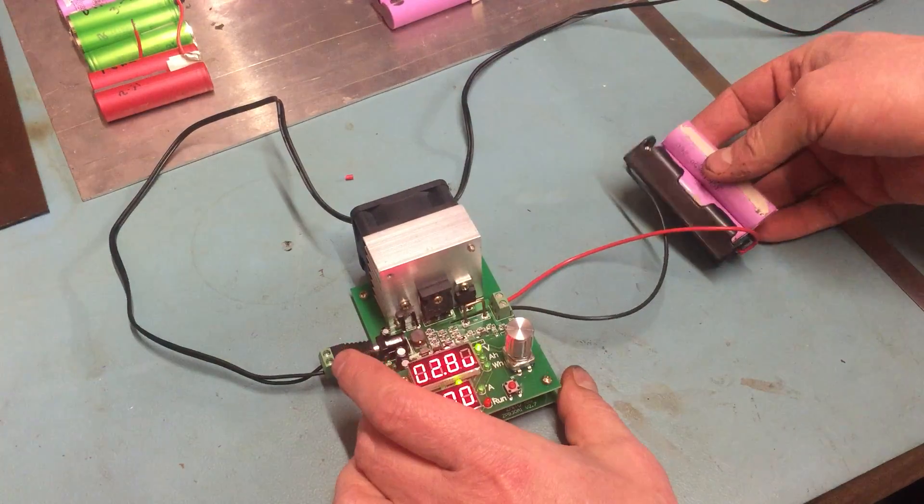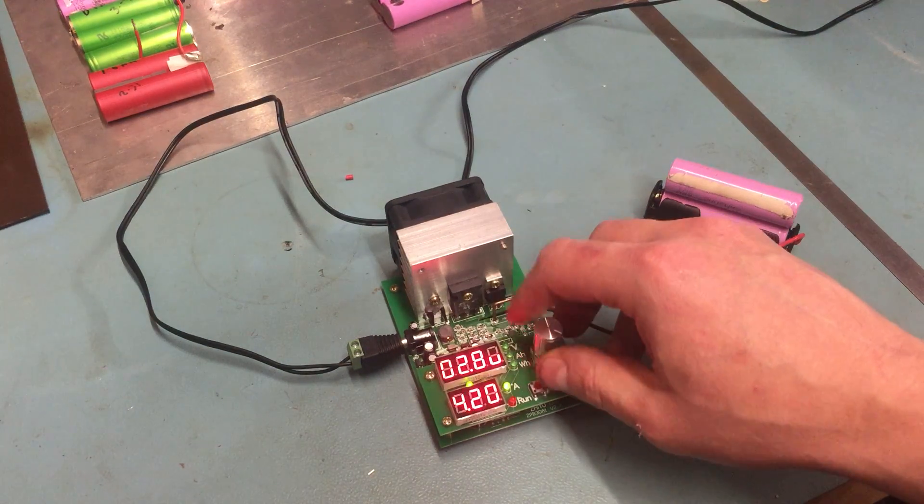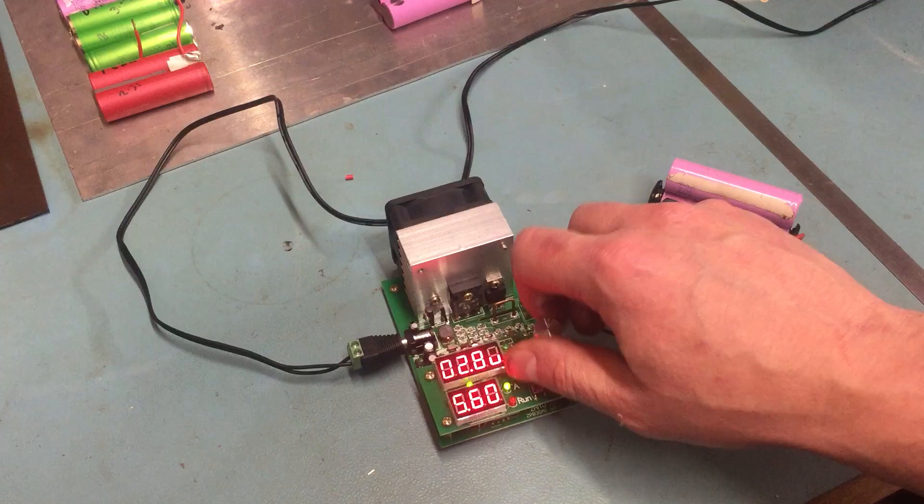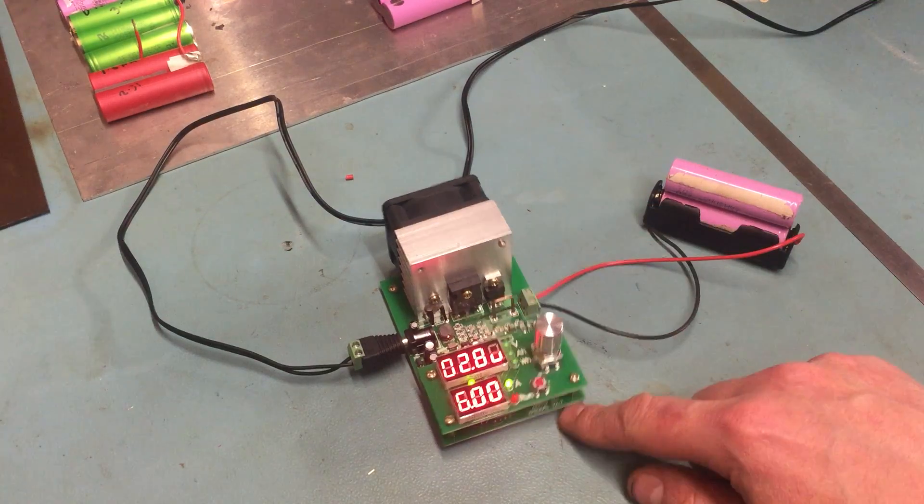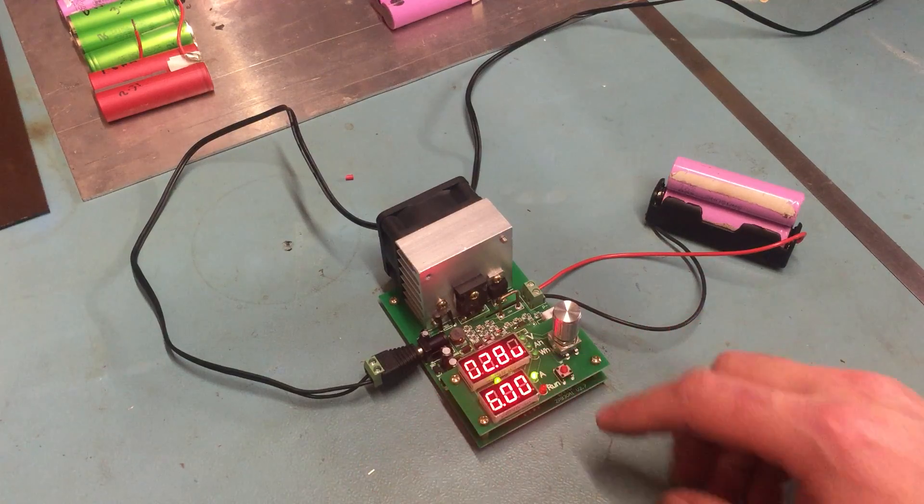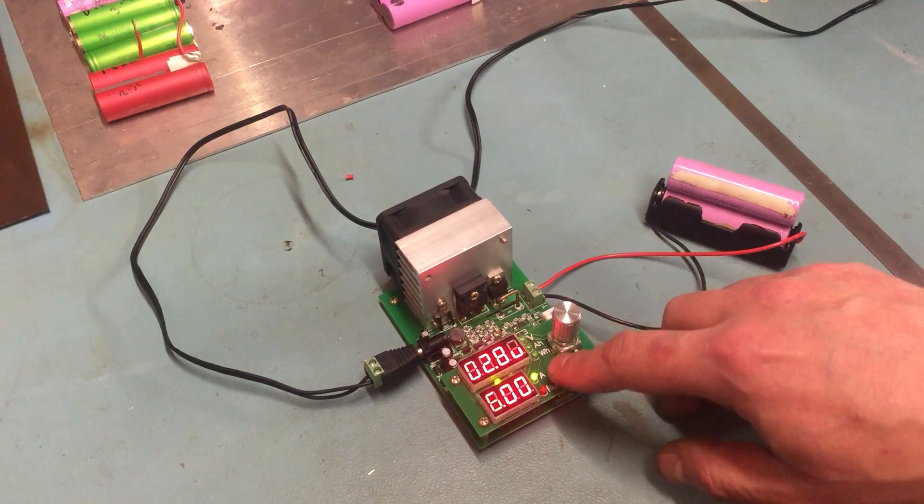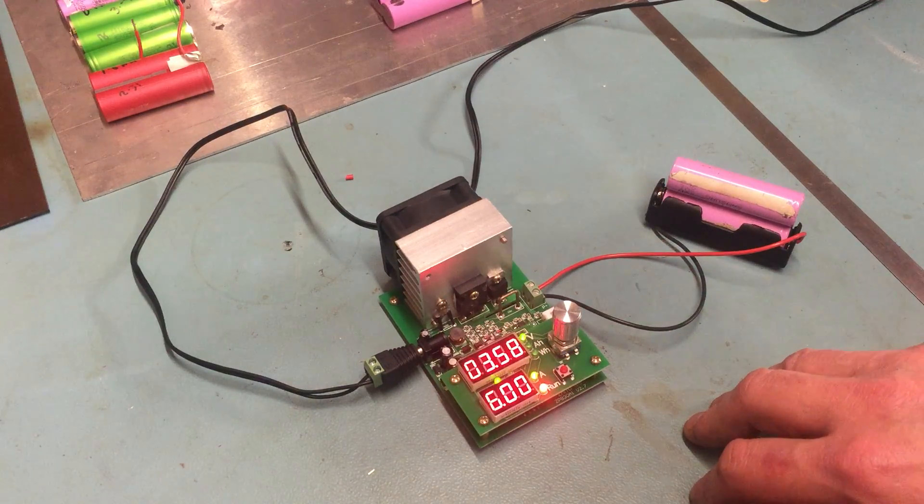So this is actually a pair of 18650s. So I'm actually going to set this to 6 amps, 6 amp discharge. So it's 2.8 volts minimum voltage and 6 amp current pull. Press that briefly and off it goes.